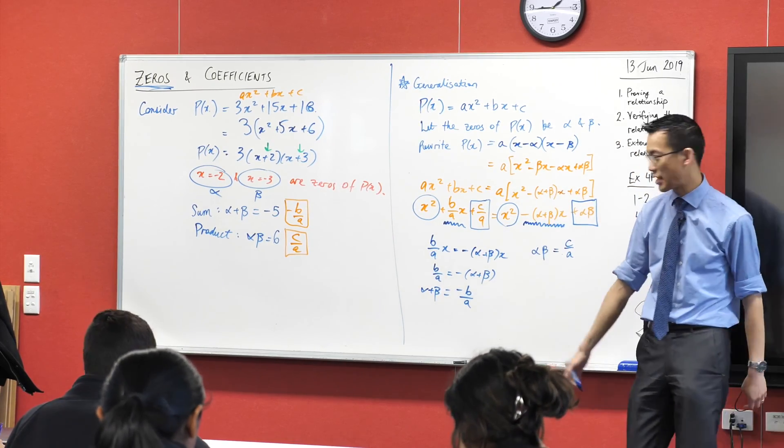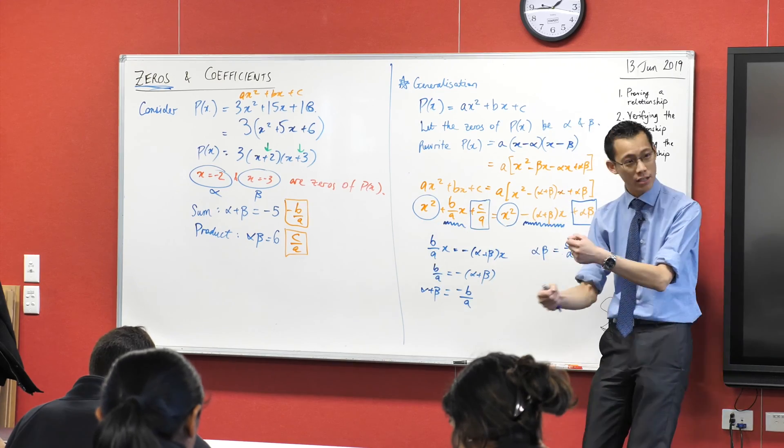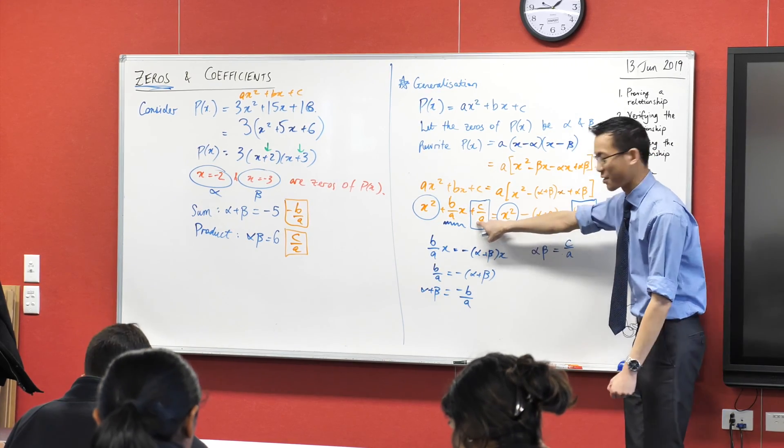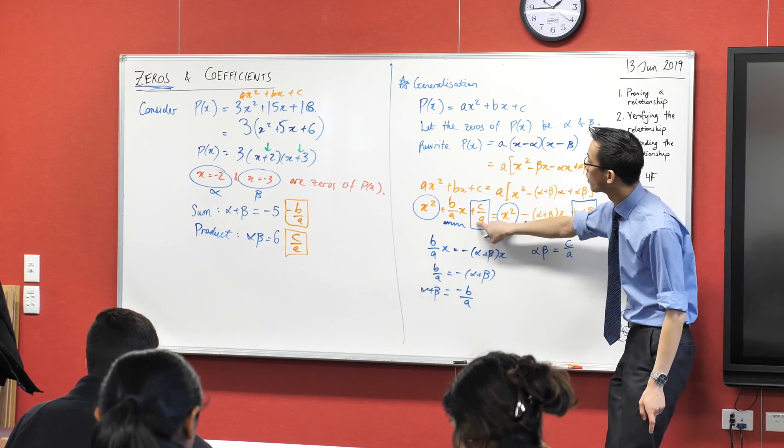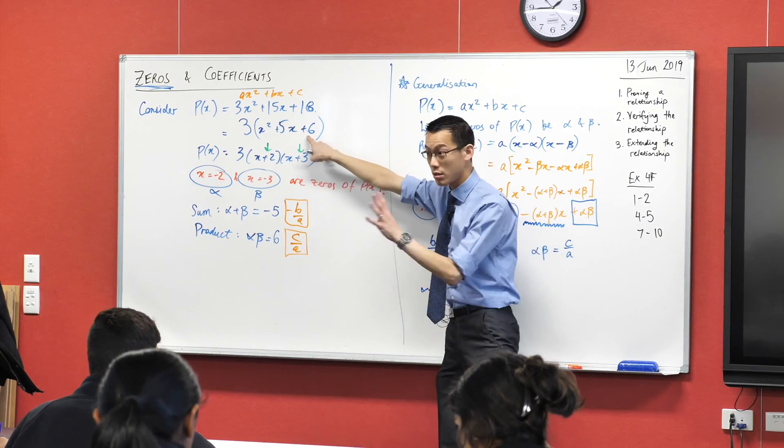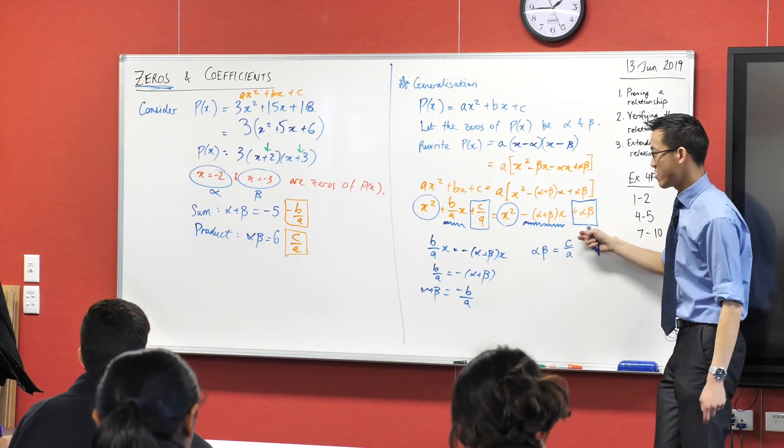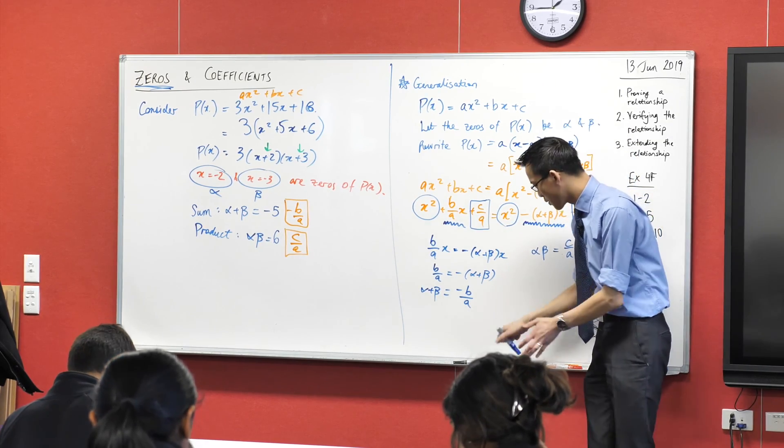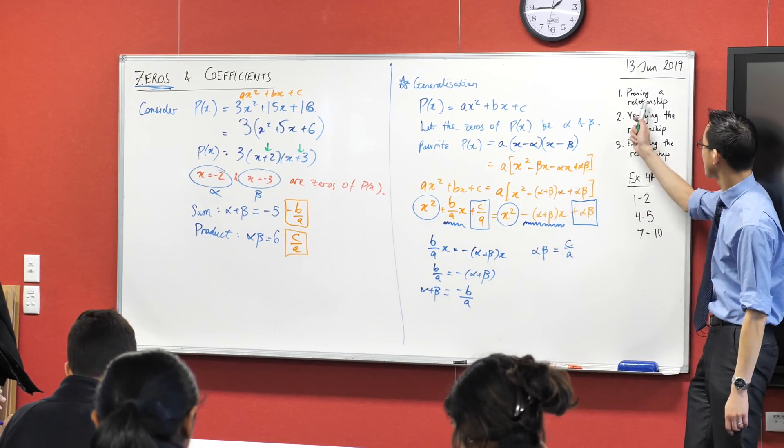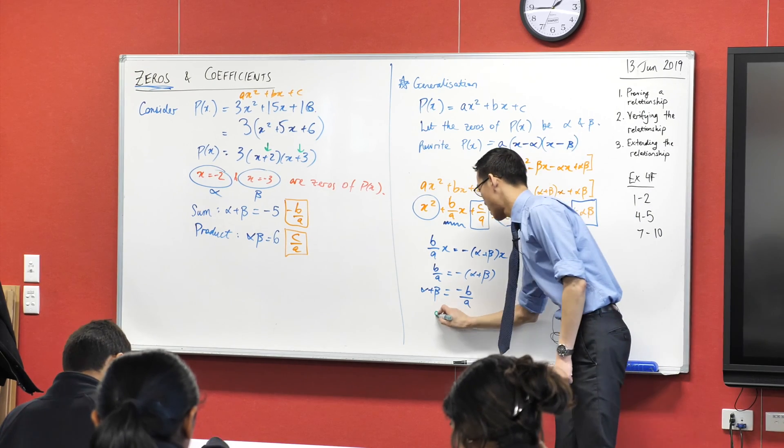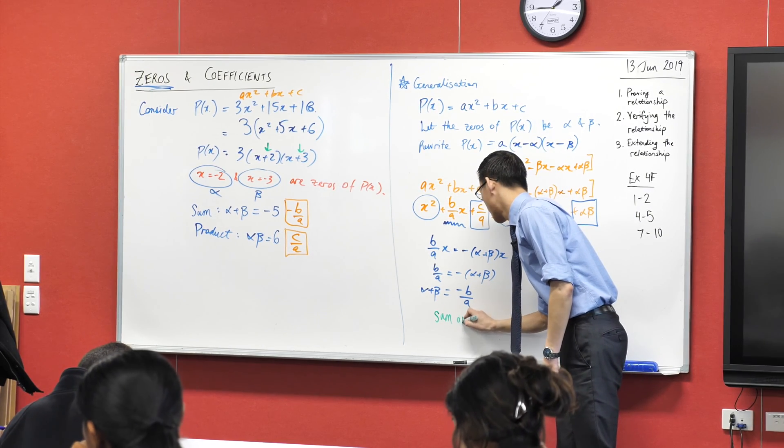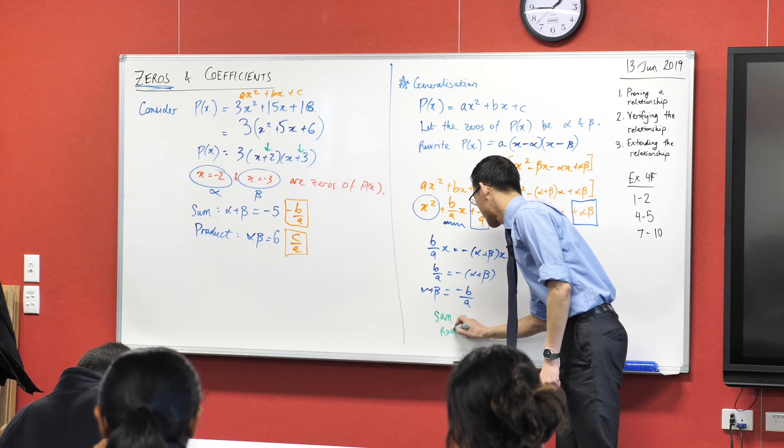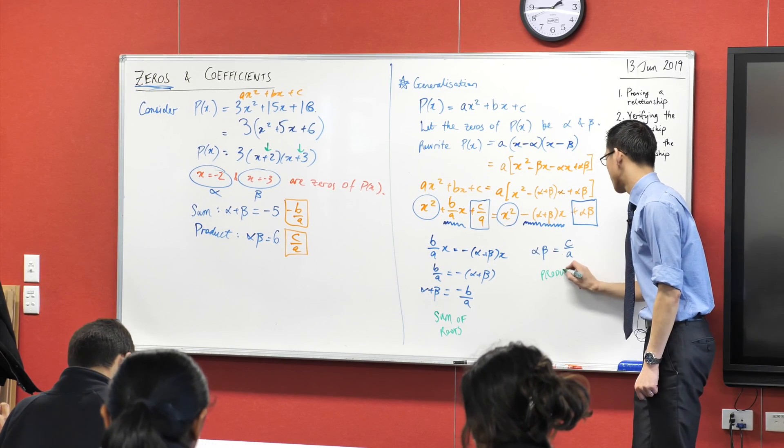That's the only constant term on the left. Everything else has like weird x's sort of tied up within it. But this is a constant term, a number, like say for example, 6. It's just a number. And then this is just a number, right? Negative 2 times negative 3. So these results that you've just proved, right? This is the proof of the result. This is the sum of roots. And this is the product of roots.